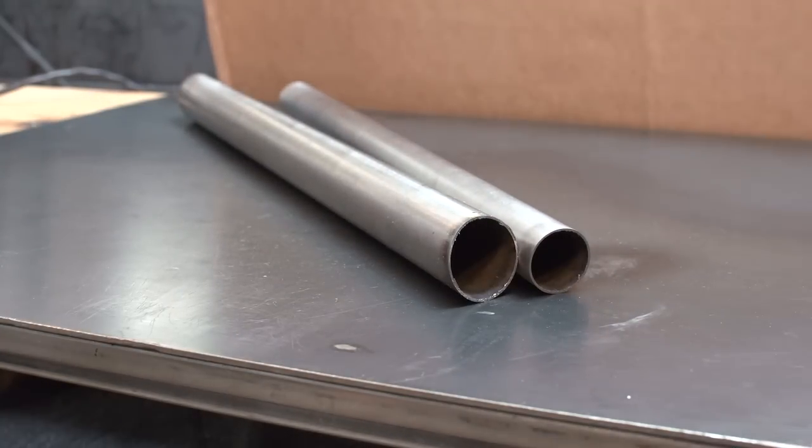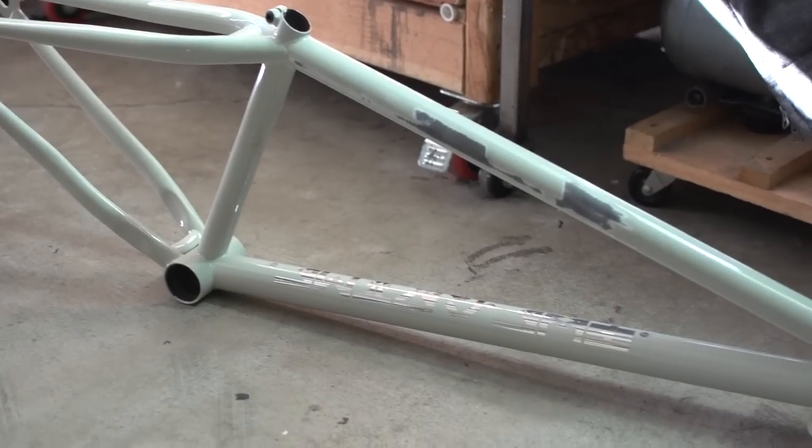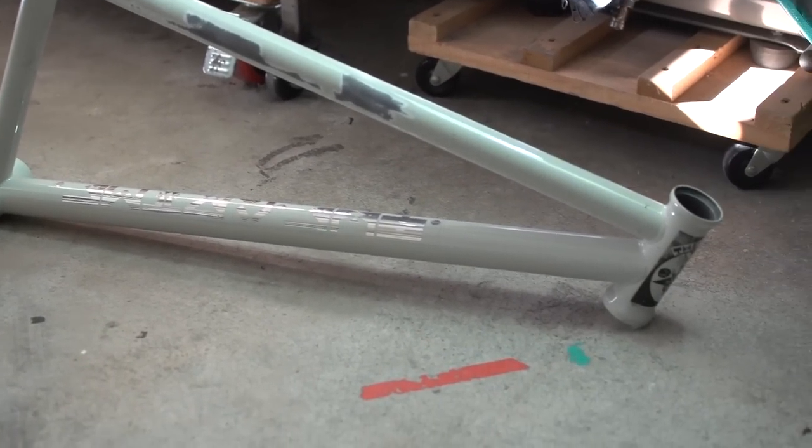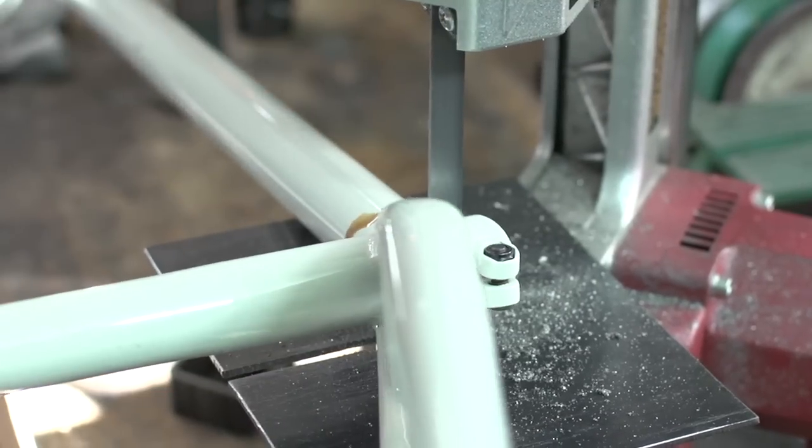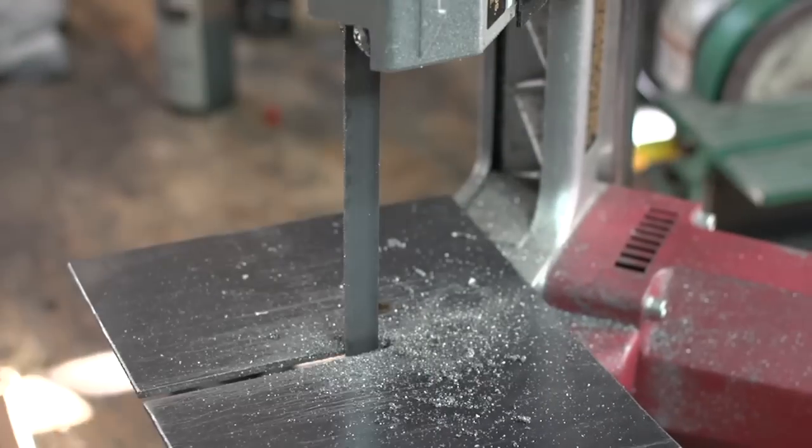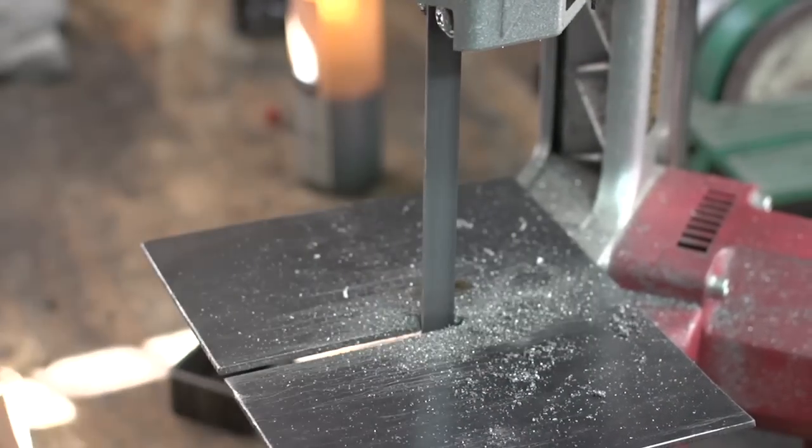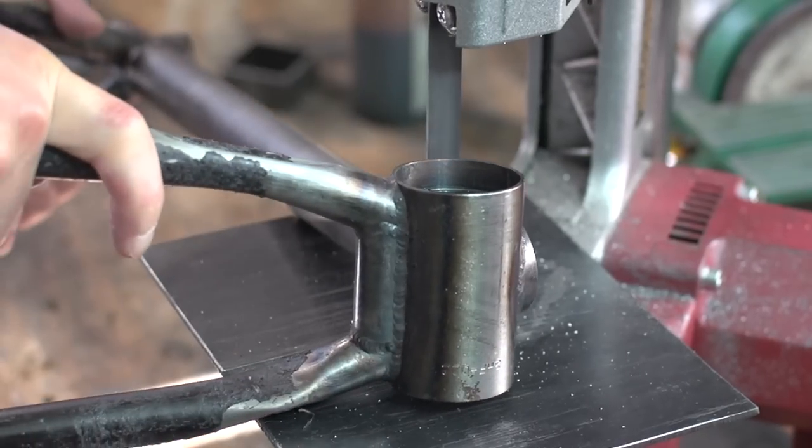Top tube is already pretty large diameter to begin with so to get my down tube I will cut a top tube off of another frame I have sitting around. Kind of feel bad cutting this frame up but I guess repurposing it is better than just having it sitting around doing nothing.